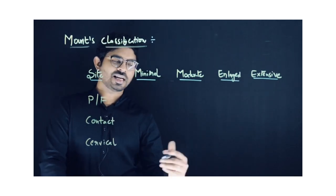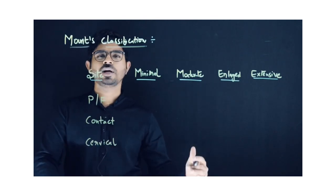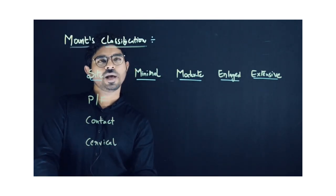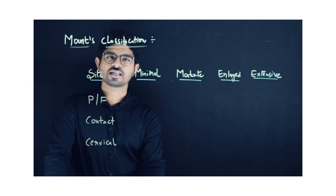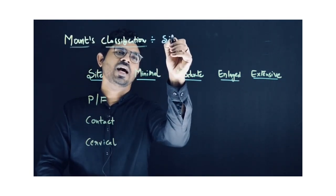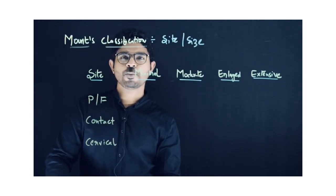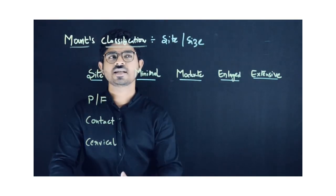includes it doesn't mention the intensity of the dental caries, how deep the dental caries is, and many other things. To make it simple, Mount has proposed a classification called the site and size classification, which gives information both about the site where it occurs